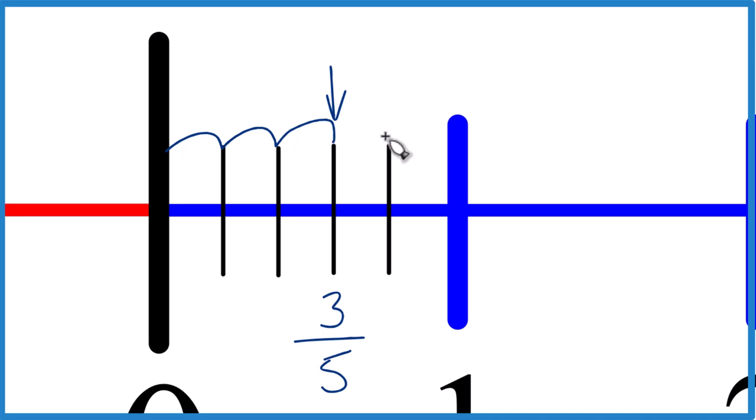If we go over 1 more, that would be 4 fifths, 1 more, that would be 5 fifths, and 5 divided by 5, that's just 1. So that's how you find 3 fifths on a number line.